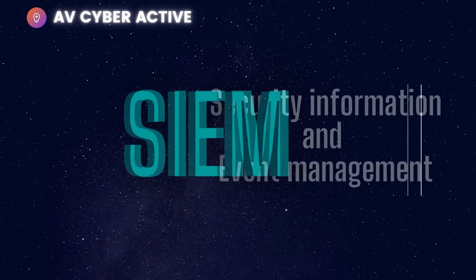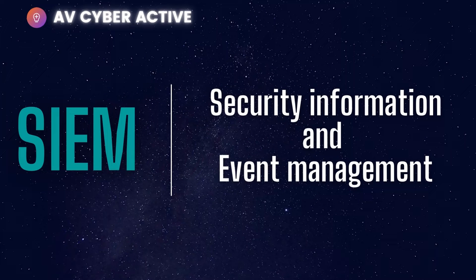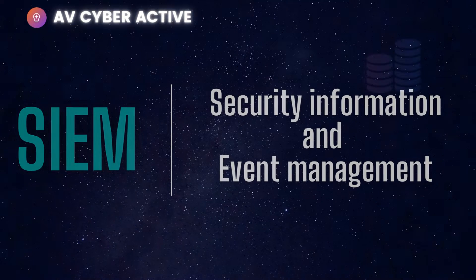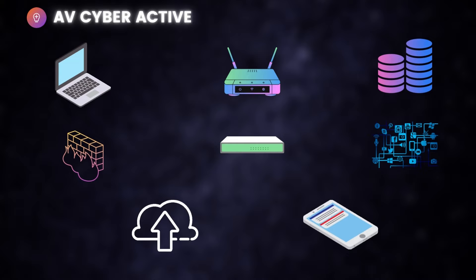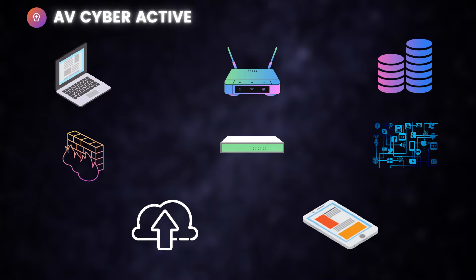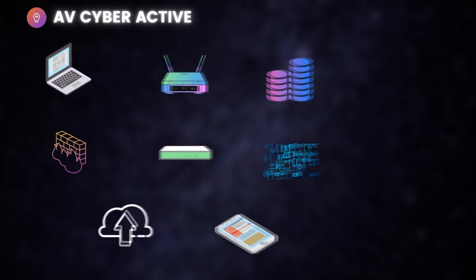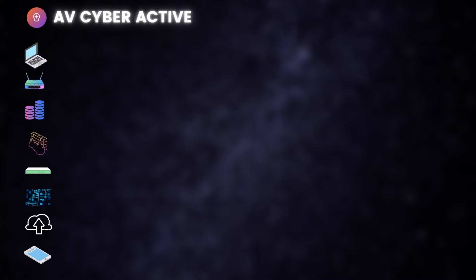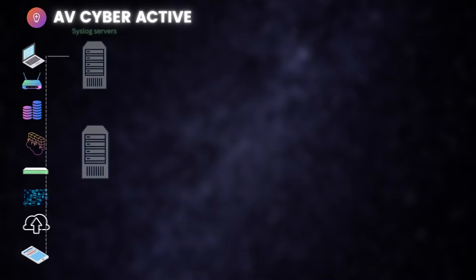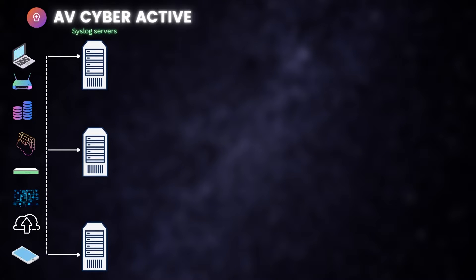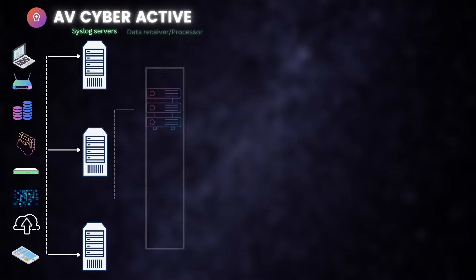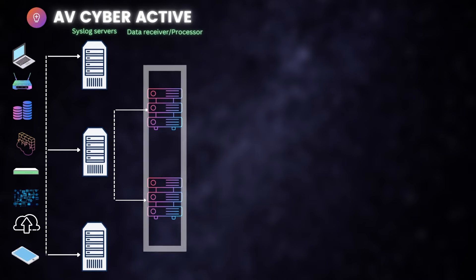SIEM is an abbreviation for Security Information and Event Management. A typical corporate environment will have a lot of end devices like laptops, desktops, routers, database devices, firewall dedicated appliances, IoT (Internet of Things) devices, cloud vendors, and even cell phones, which all connect to your corporate network. Both system and security logs are generated by these devices and can be pulled and logged onto a centralized log server or a syslog server, which is usually geographically distributed for major organizations.